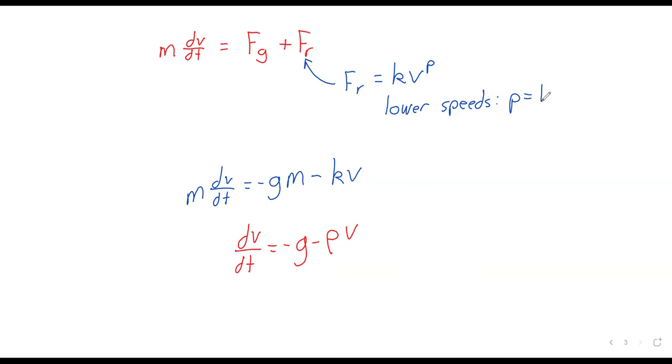And we have a negative sign here because the force due to air resistance always opposes motion. When the object is going up, the force due to air resistance is pushing it down. When the object is falling, the force due to air resistance is pushing it up. So that negative sign causes air resistance to oppose motion. And now we can divide both sides by m. So dv/dt equals negative g minus rho times v. All of these constants are positive.